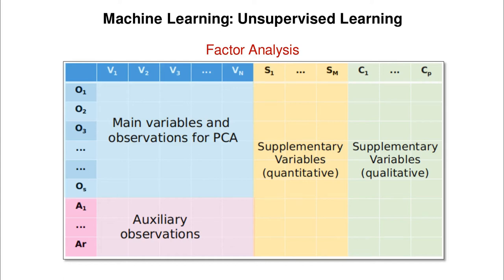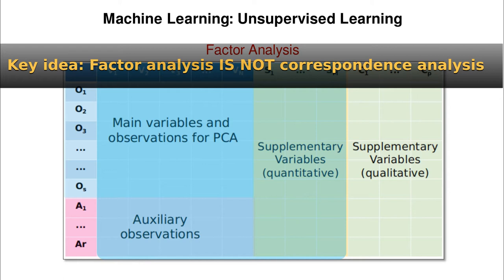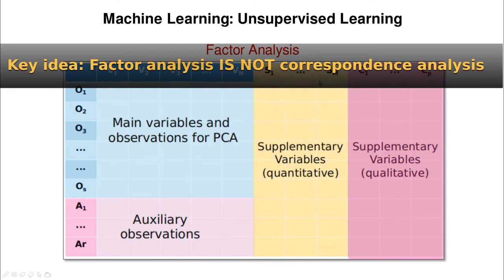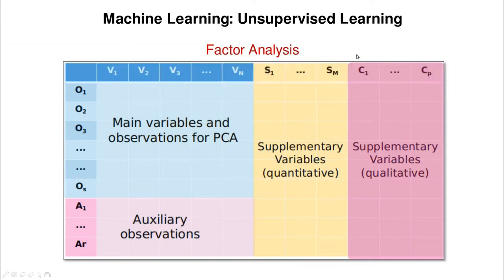In this video, we're going to talk about factor analysis. Factor analysis is basically using the same ideas of PCA, but for categorical variables. Do not confuse this idea with correspondence analysis, which is for two-entry tables. Here I'm talking about variables which are completely categorical. But instead of talking about just factor analysis, I'm going to use an extension called hybrid factor analysis, or factor analysis of mixed data, or FAMD.